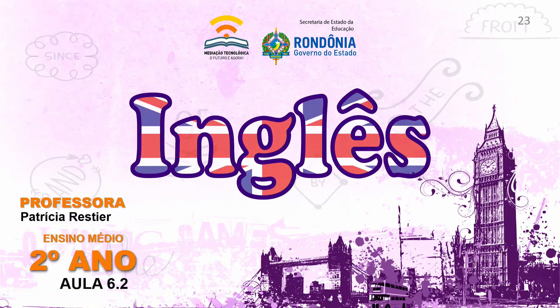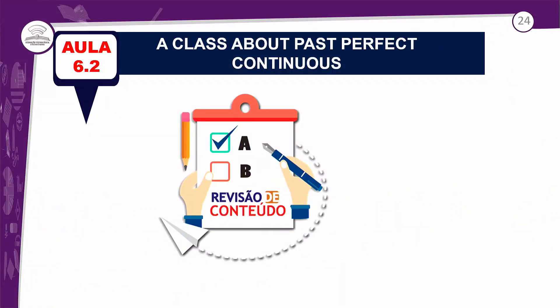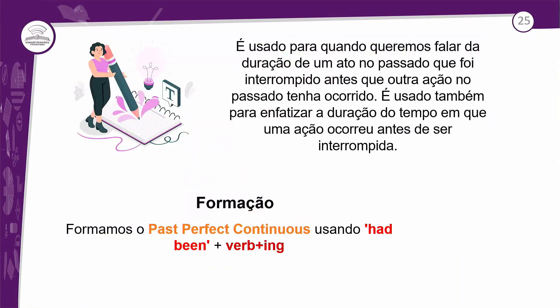6.2, título da aula: A Class About Past Perfect Continuous. Uma aula sobre o passado perfeito contínuo. Vamos relembrar — é um tempo verbal que não é difícil de entender o uso e não é difícil entender a estrutura.